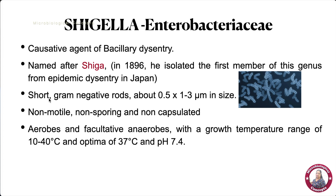When we see the morphology of Shigella species, these are short gram-negative rods with a size of about 0.5 × 1 to 3 micrometers. They are non-motile, non-sporing, and non-capsulated rods. They are aerobic and facultative anaerobic bacteria — meaning they can survive both in the presence and absence of oxygen.